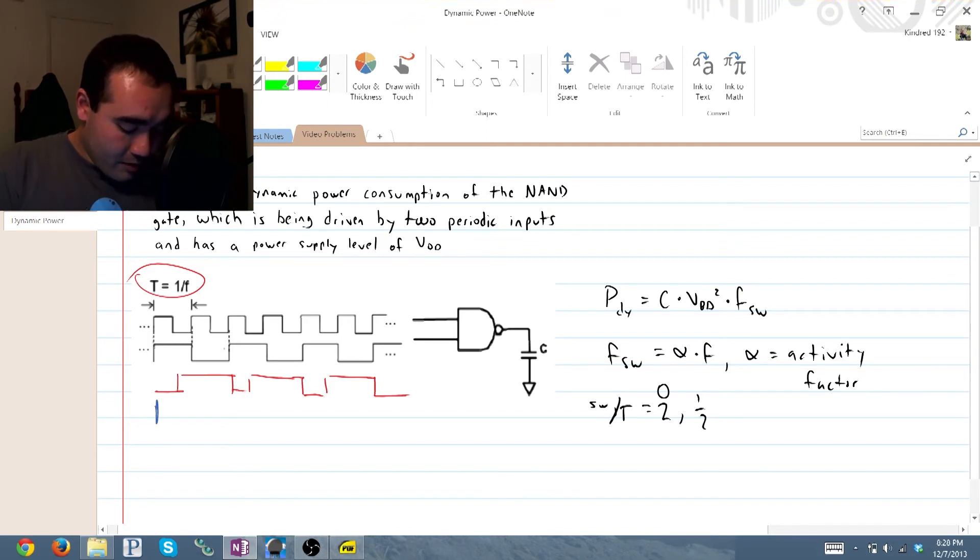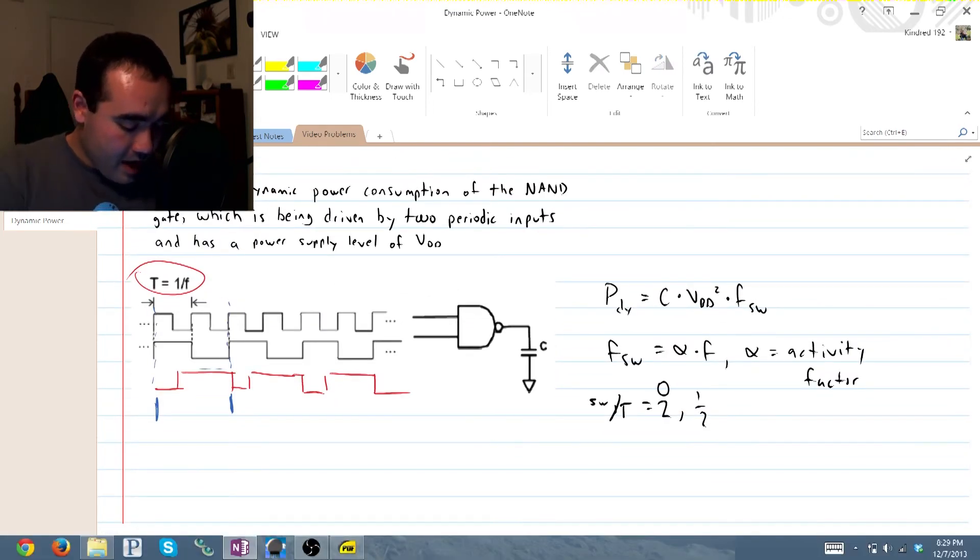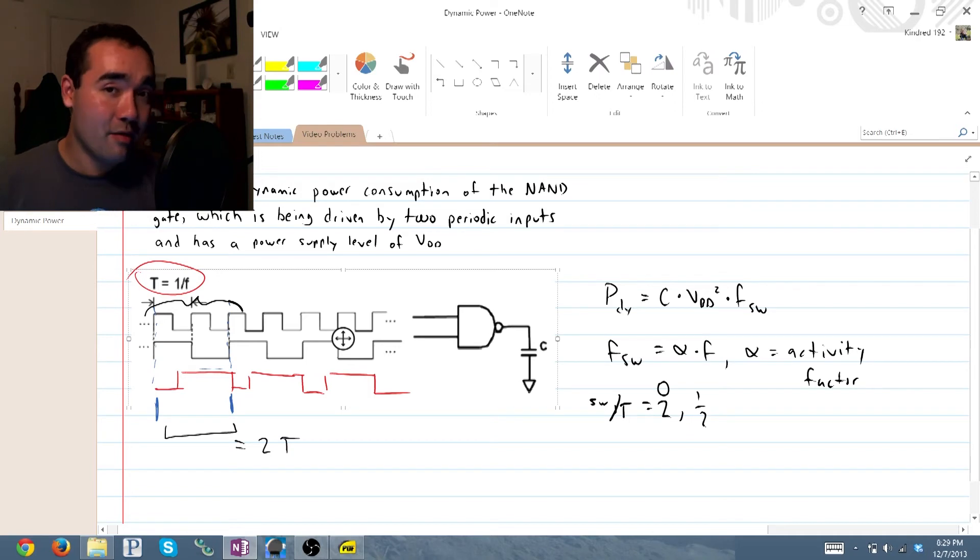The period of our output runs from here to right here. And you can see that this period here is equal to two times the period T because every two cycles up on top here you get one complete cycle at the bottom.